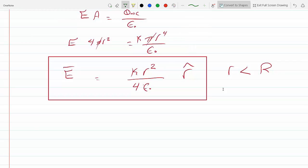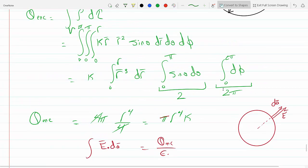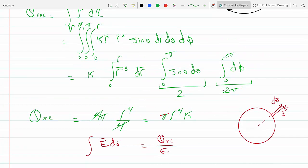I could go that extra step. So outside, I know that I would draw my Gaussian surface outside, and now Q enclosed is the entire charge, so it's ∫rho dτ over the surface of the entire sphere. So this will be the same except instead of zero to r, it will be zero to big R.